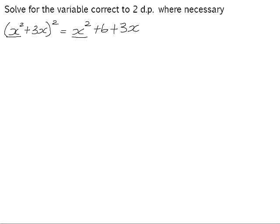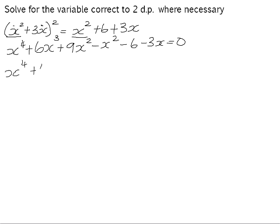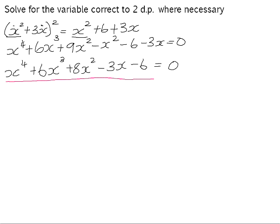x squared plus 3x, all squared, is x to the power of 4. x squared times 3x is 3x cubed. We'll have two of those, giving us 6x cubed plus 9x squared. Then if we subtract the x squared, the 6 and the 3x from both sides to equate to 0, and tidy up: 9x squared minus x squared is 8x squared, minus 3x minus 6 equals 0. The equation we're left with — x to the power of 4 plus 6x cubed plus 8x squared minus 3x minus 6 — does not factorize the way we know how.